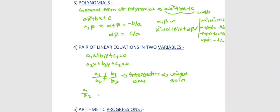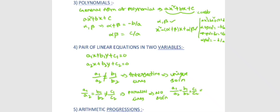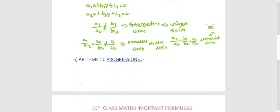If a1 by a2 equals b1 by b2 but not equal to c1 by c2, these are parallel lines. If a1 by a2 equals b1 by b2 equals c1 by c2, this gives an infinite number of solutions. These are the main important formulas.